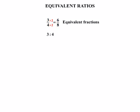Now in a similar way, equivalent ratios: 3 to 4. If we times the first one by 2, it made it a 6. Times the 4 by 2, made it an 8. 3 to 4 is in fact the same as 6 to 8. That is an example of equivalent ratios.